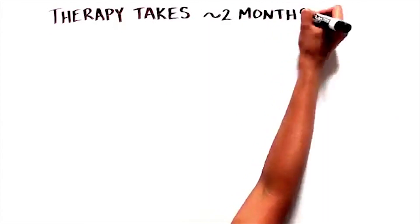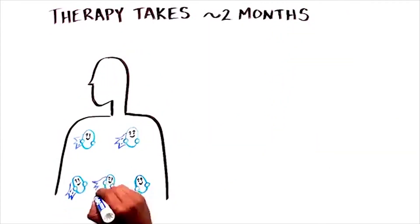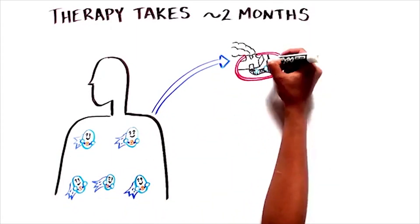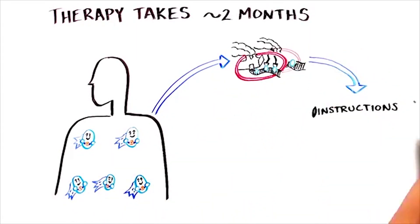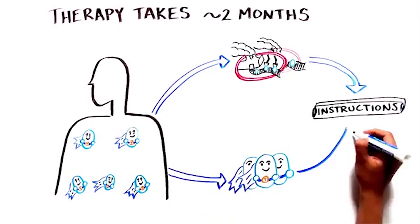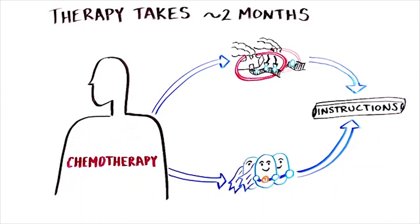The therapy is administered in several steps, which take about 2 months. First, blood stem cells are collected from the patient and modified with instructions to identify and eliminate the cancer cells. Next, immune cells are collected from the patient and receive the same instructions. During this time period, the patient will receive chemotherapy to make space for the modified immune and blood stem cells.